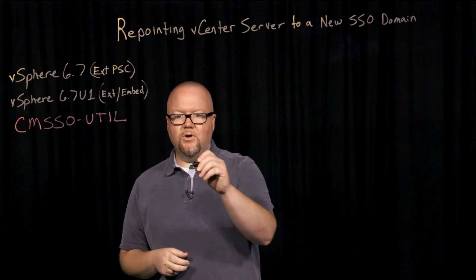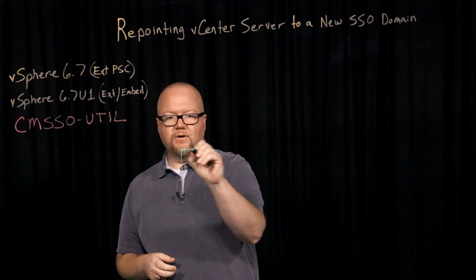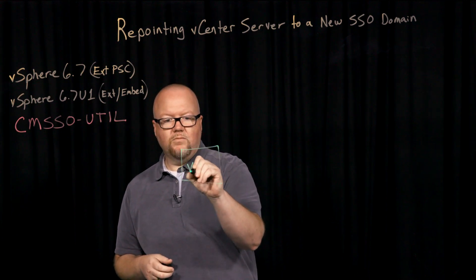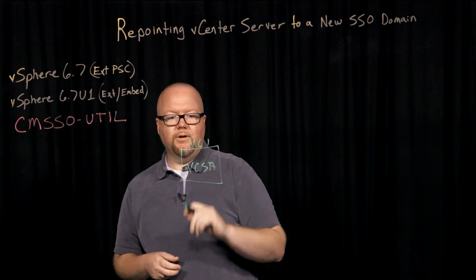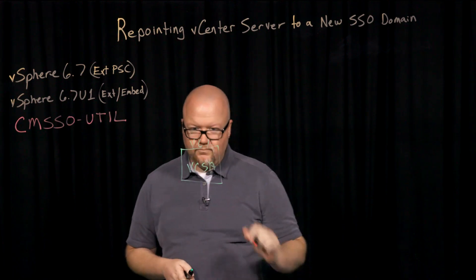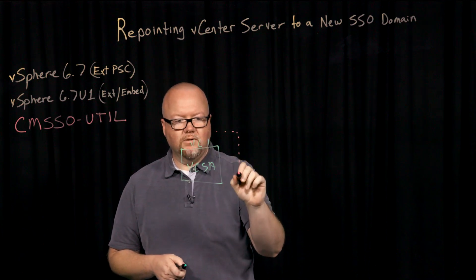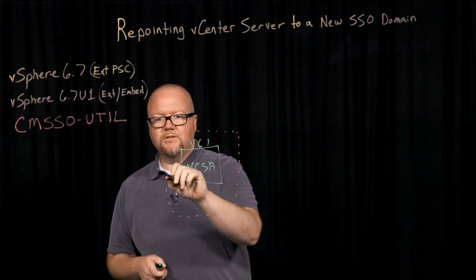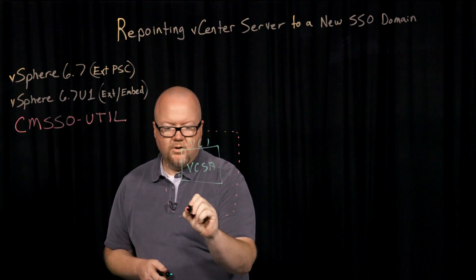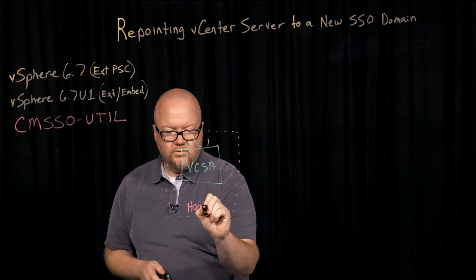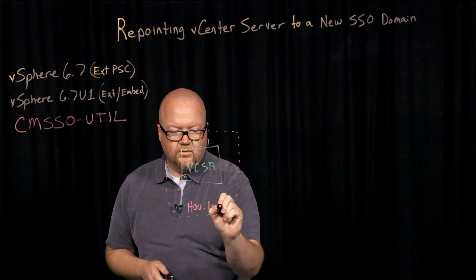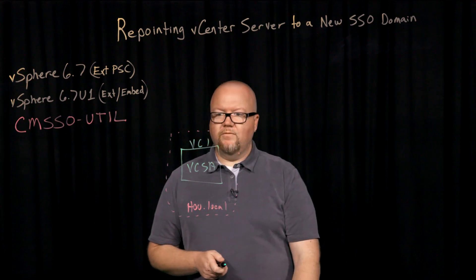We'll be using our cmsso-util utility for this repoint. In this scenario, we'll have a vCenter server — we'll call him VC1. This is in its own SSO domain, and we'll call this HOU.local, or Houston.local.